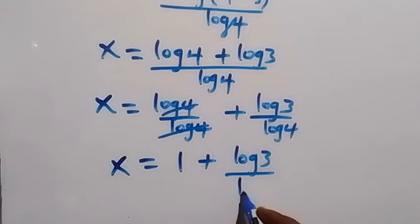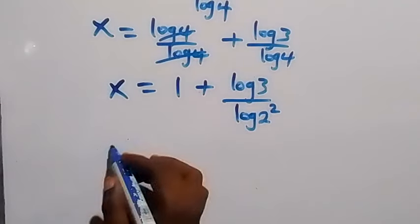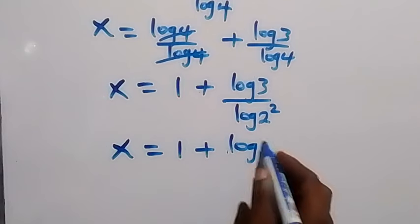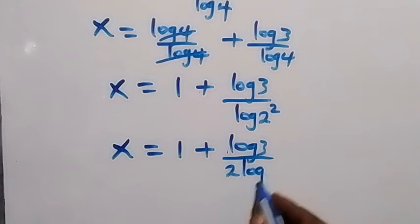Let's write it as log 2 squared. Also from power law, this 2 we take it to the back here. We have x now equals 1 plus log 3 over 2 log 2.